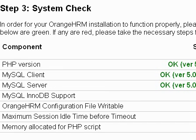In the system check screen, the installer checks your PC for all requirements needed to run OrangeHRM. If everything is fine, you should see all listed items in green. If there is an issue with any requirement, the installer will show it in red with a question mark that takes you to the help file explaining how to correct the issue. After correcting any issues, remember to click the recheck button.